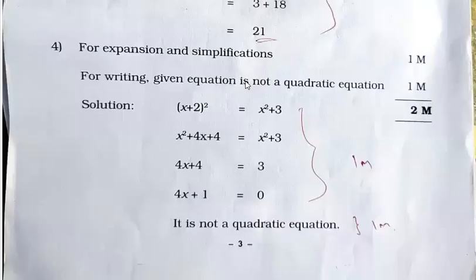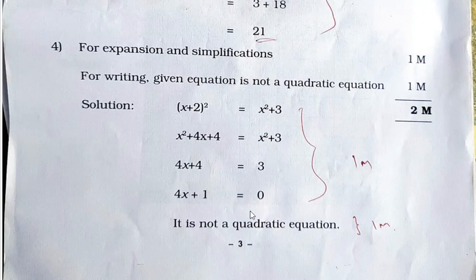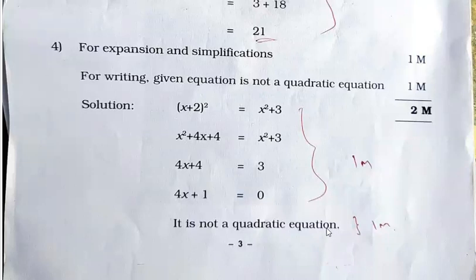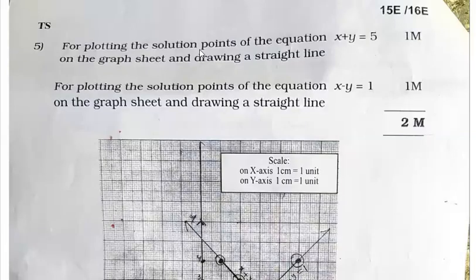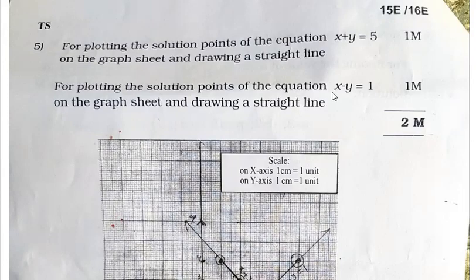For expression and simplification from the quadratic equation chapter, they give one mark. For writing the conclusion that it is not a quadratic expression or quadratic equation, that sentence gets one mark. For plotting the solution points of the equation x + y = 5 you get one mark, and for x − y = 1 you get one mark — just plotting this graph.